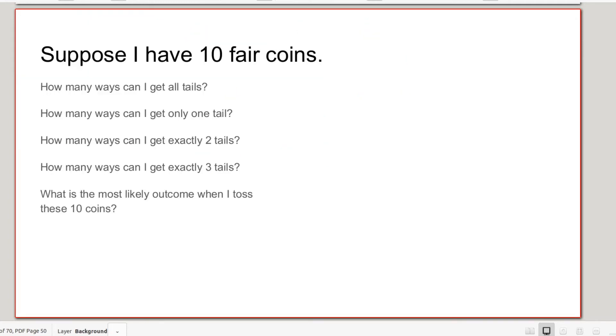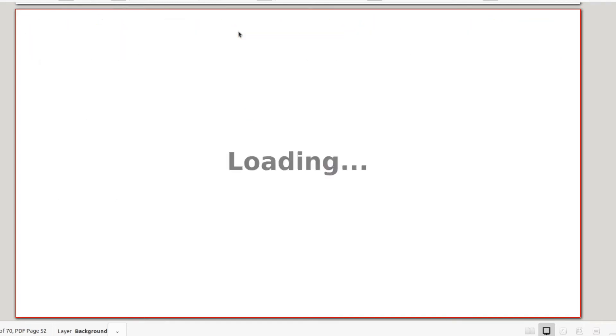Suppose I have 10 fair coins. How many ways can I get all tails? That's simple, there's just one. How many ways can I get only one tail? Any one of the coins could be the one tail, so that's 10. If my number of coins is n, it will be n ways of getting one tail. How many ways can I get two tails out of 10 coins? That is a little bit harder to calculate. I have 10 coins here. Let's label them 1, 2, 3, up to 10. How many choices do I have if I want to have three tails out of these?